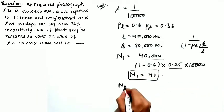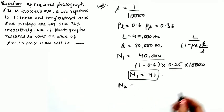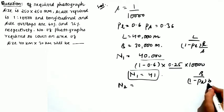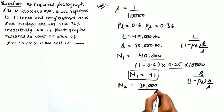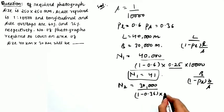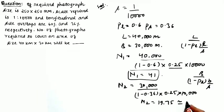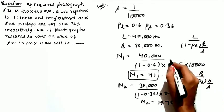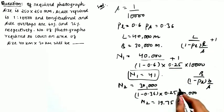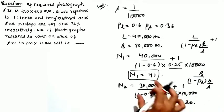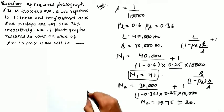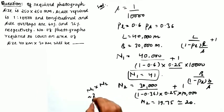Similarly, N2 is calculated using B / ((1 - PS) × b / S). With B = 30,000m, PS = 0.36, and b = 0.25m, N2 works out to 19.75. Since photographs cannot be in decimals, and adding 1 to the formula, N2 rounds to 20. The total number of photographs is N1 × N2 = 41 × 20 = 820 photographs.